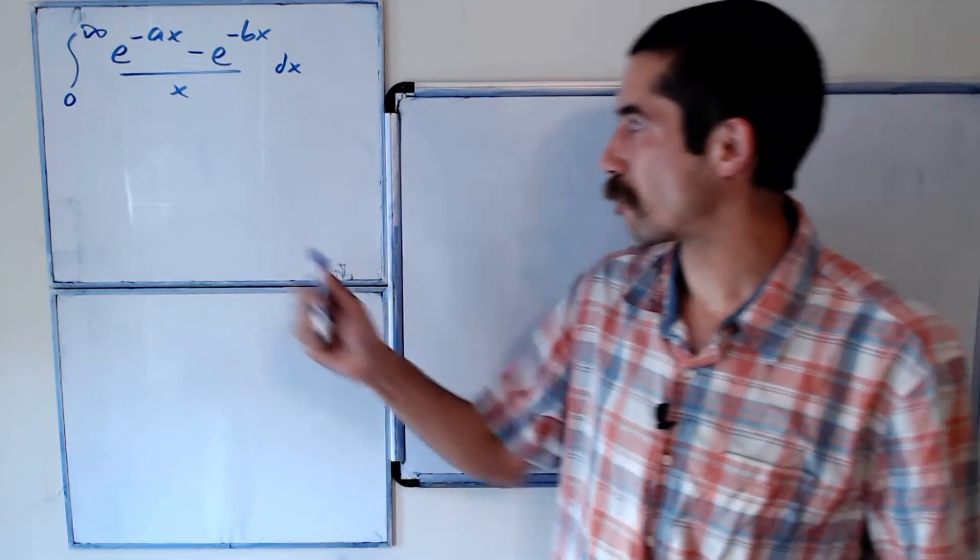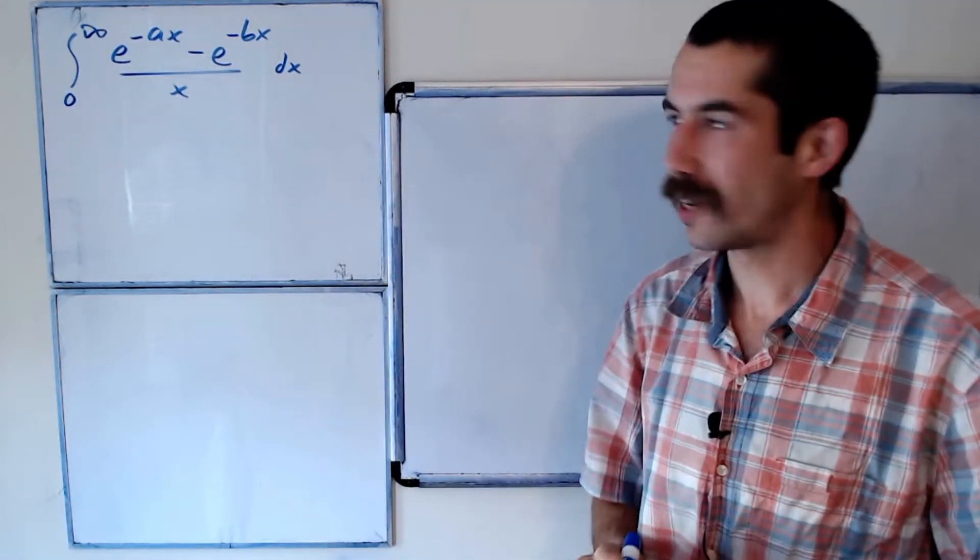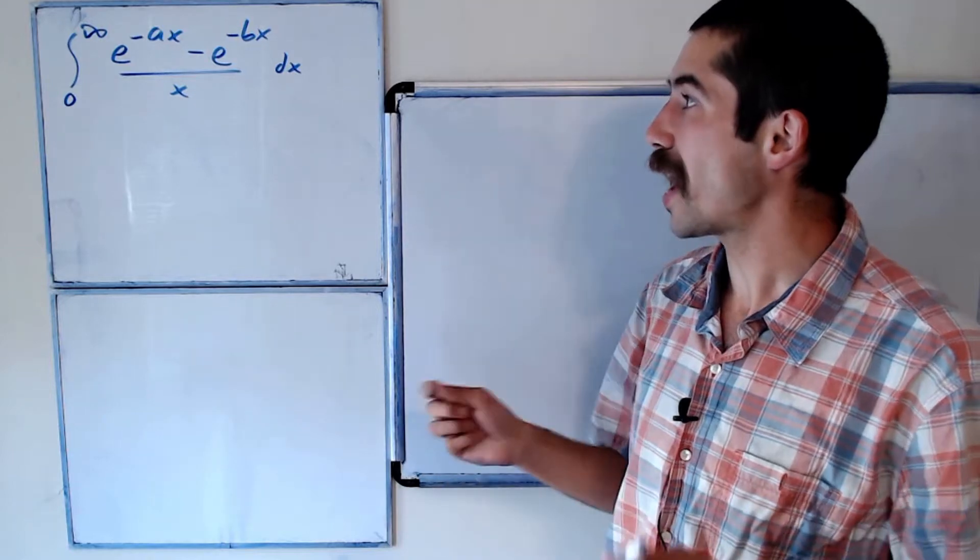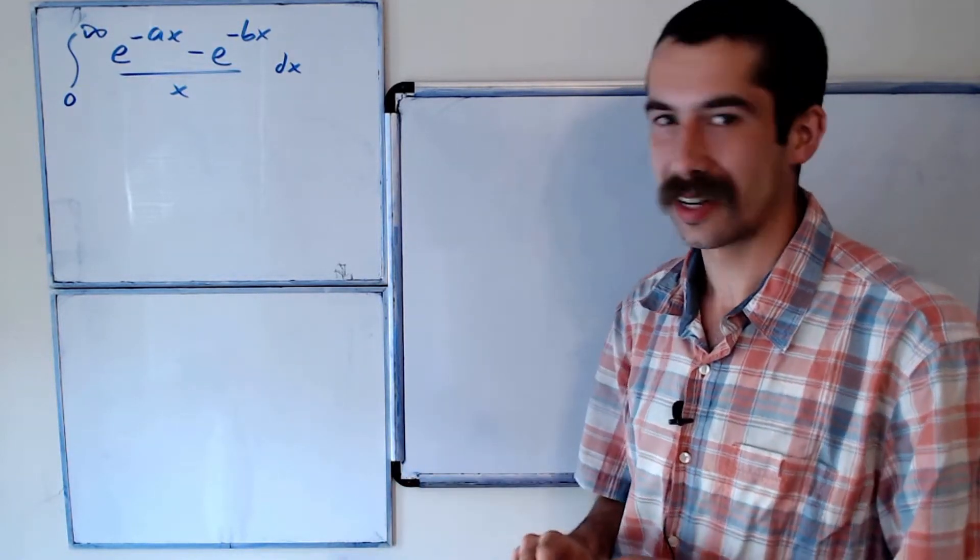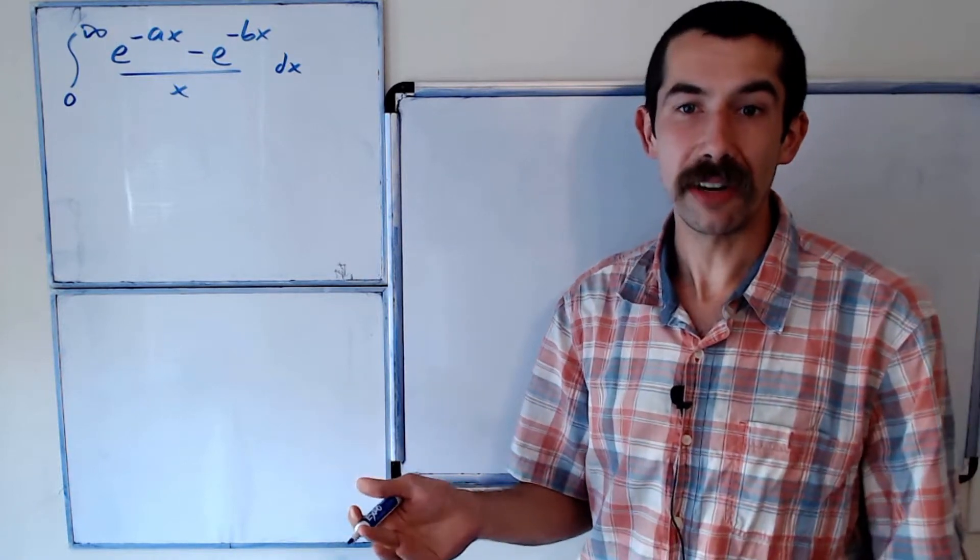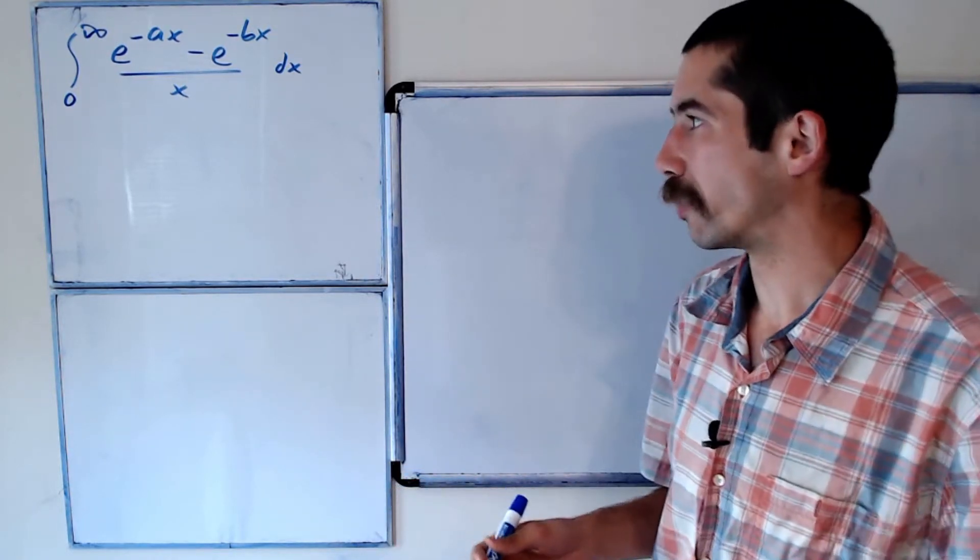We got a tough integral going on today folks. Integral from 0 to infinity of e to the negative ax minus e to the negative bx all over x dx. Give it a try or you can just watch me solve it.